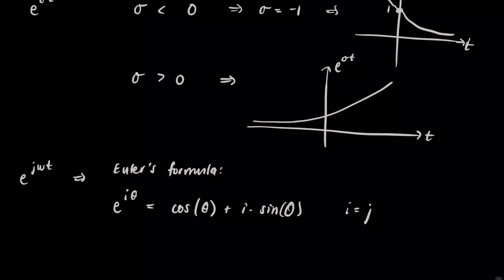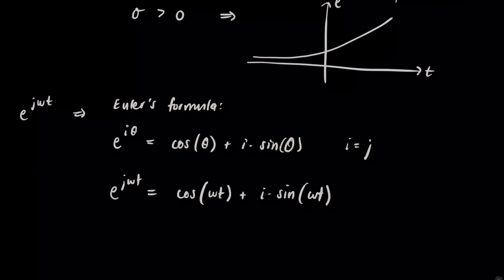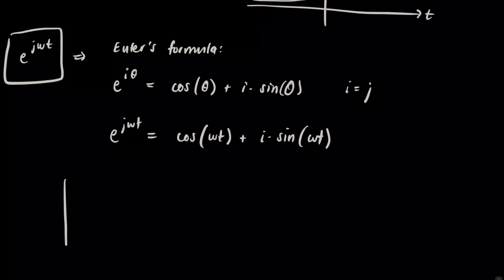So when you have omega t, i equals j, sorry for the mathematicians out there, us electrical engineers, we're just going to make it j, cosine omega t plus i sine omega t. Well, this here, this e to the j omega t is actually just a phasor moving around the unit circle.